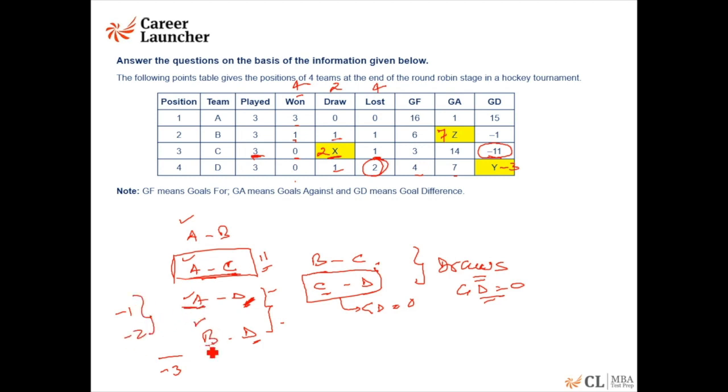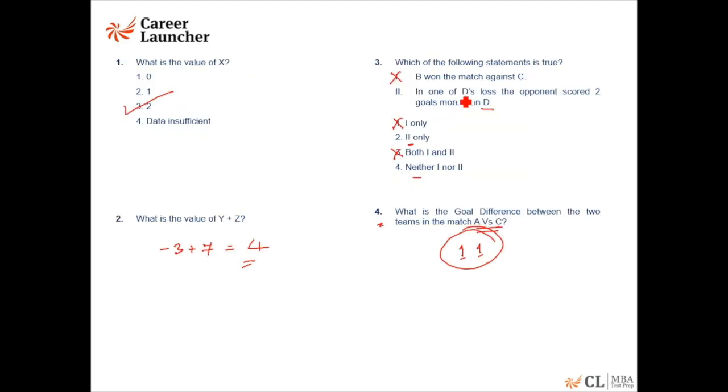That means the only way possible is a minus 1 and minus 2. Whether it is minus 1 in this match or this match, I don't know. But out of the two matches, in one of the matches the goal difference would be minus 1. In the other match, the goal difference would be minus 2. So the statement says in one of D's loss, the opponent scored two goals more than D. Yes, this statement is correct. So the answer should be choice 2.